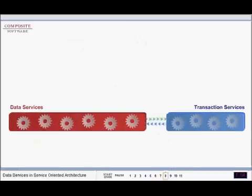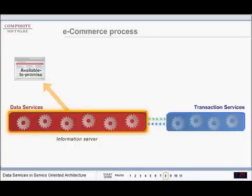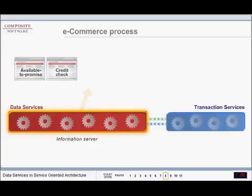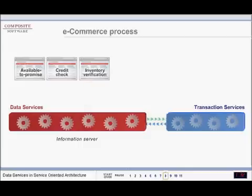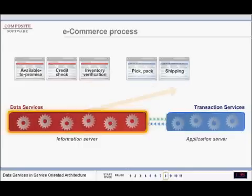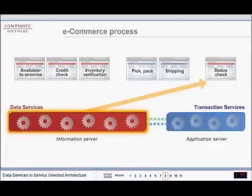For example, here's an e-commerce process. The information server receives an available-to-promise request. Data services deliver availability and price quotation, and also provide credit information and inventory verification. Pick, pack, and shipping are all transaction services. Checking order status, probably the most common service in the e-commerce process, is also a data service.